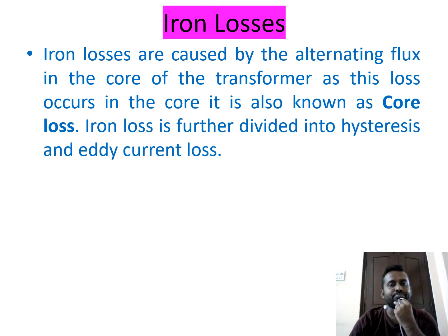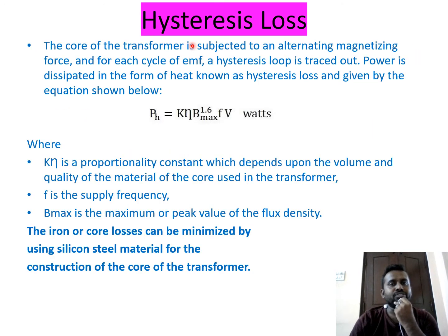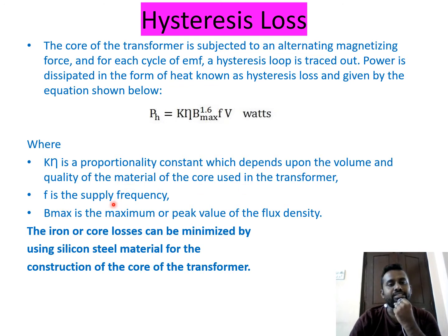The core of a transformer is subjected to an alternating magnetizing force, and for each cycle of EMF a hysteresis loop is traced out. Power is dissipated in the form of heat, known as hysteresis loss, given by: pH = Kη × Bmax^1.6 × f × V watts, where Kη is a proportionality constant depending on the volume and quality of the material, f is the supply frequency, and Bmax is the maximum flux density.